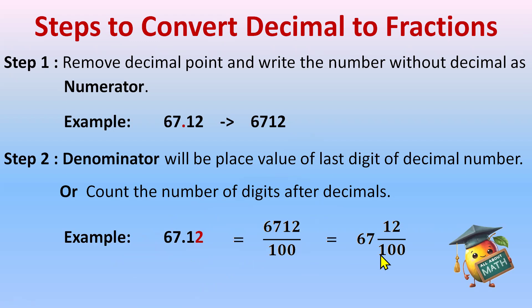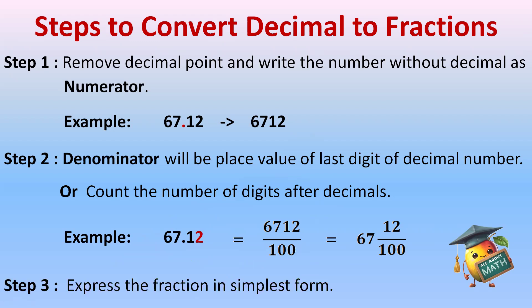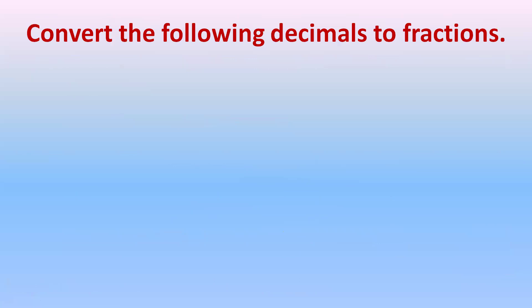So it's 67 and 12 over 100. Let's do more examples to understand better. Lastly, always express the fraction in its simplest form — whatever fraction you get, reduce it to simplest form to get your final answer. Let's start: convert the following decimals to fractions.